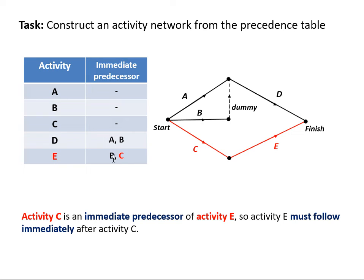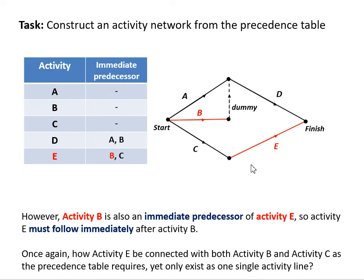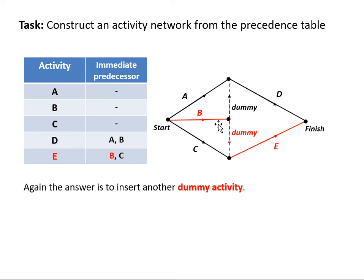Let's continue on. E follows on from activity C. Activity C is completed and E can commence. However again, activity E requires B to be completed as well. So again, we have this problem where at the end of C, activity E is drawn in, but we also need activity E to be joined to B. We can't draw two activity E's. So again, we use a dummy variable at the end of the vertex of activity B. We join it down to the end of the vertex of activity C. Now we can see that B is completed to start E and C is completed to start E. We've upheld the rule of our precedent table.